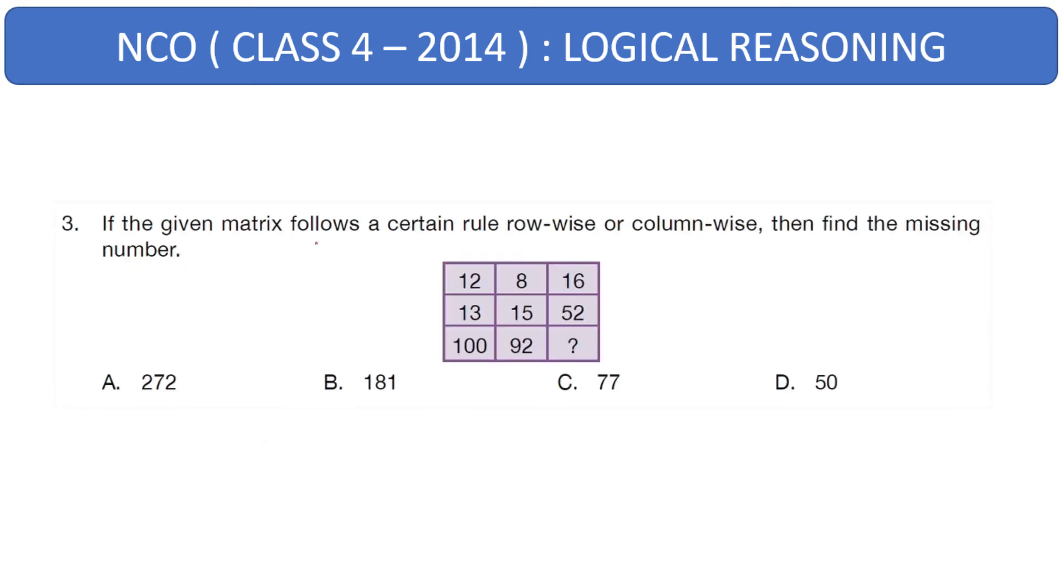Next question. If the given matrix follows a certain rule row-wise or column-wise, then find the missing number. Here, a matrix is given. Pause the video and try to get your logic around. If you look at the last row, they are quite different than the first two rows. That should give you a tip that it would be a combination of first two rows that gives the last row. And if you dig more deep, you will understand that the first row plus second row multiplied by 4 is giving the third row. This is the logic.